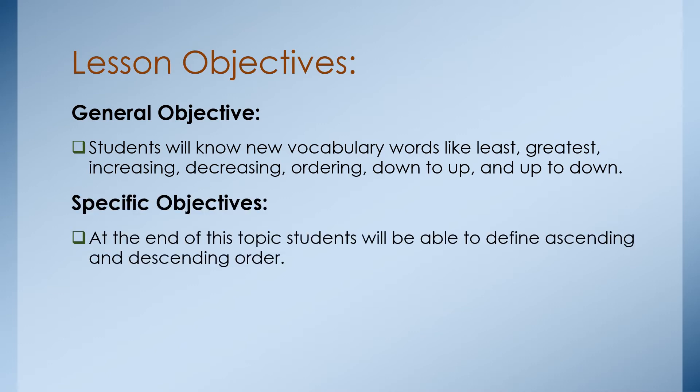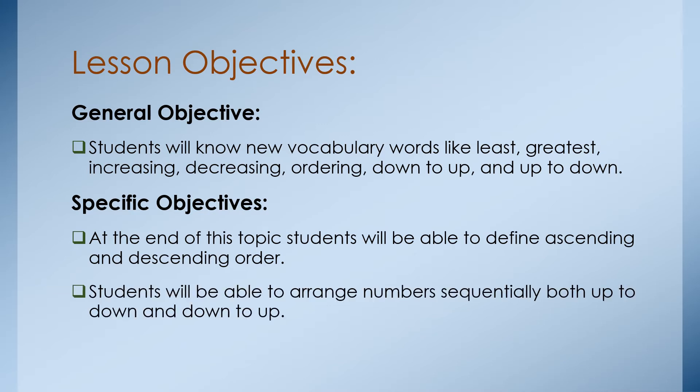The specific objectives are: at the end of this topic, students will be able to define ascending and descending order, and students will be able to arrange numbers sequentially up to down and down to up. These are the lesson objectives of my topic — ascending and descending order.